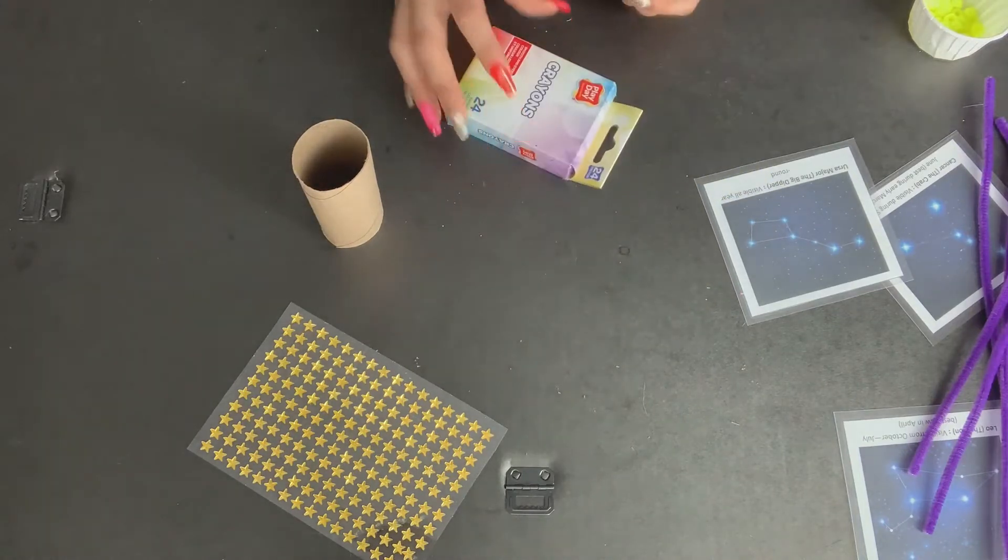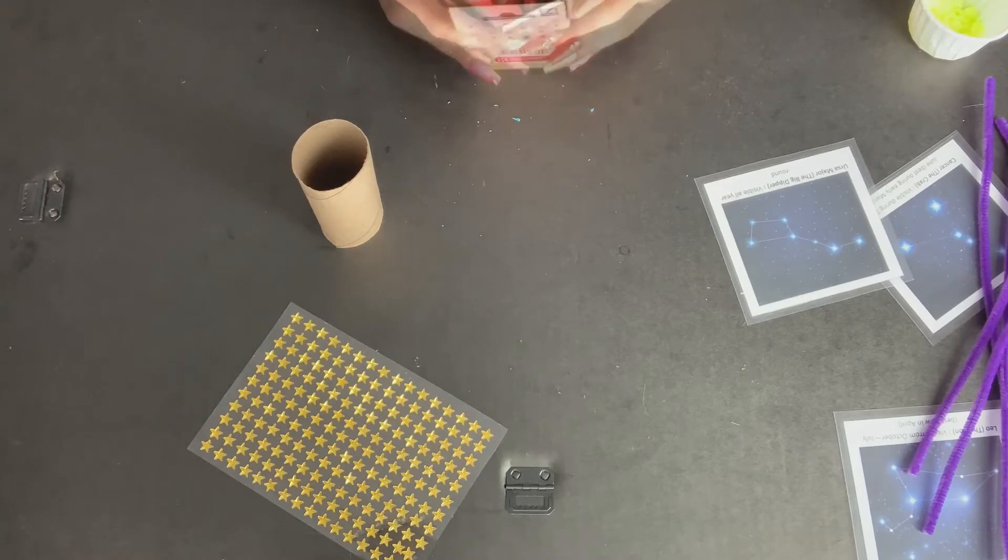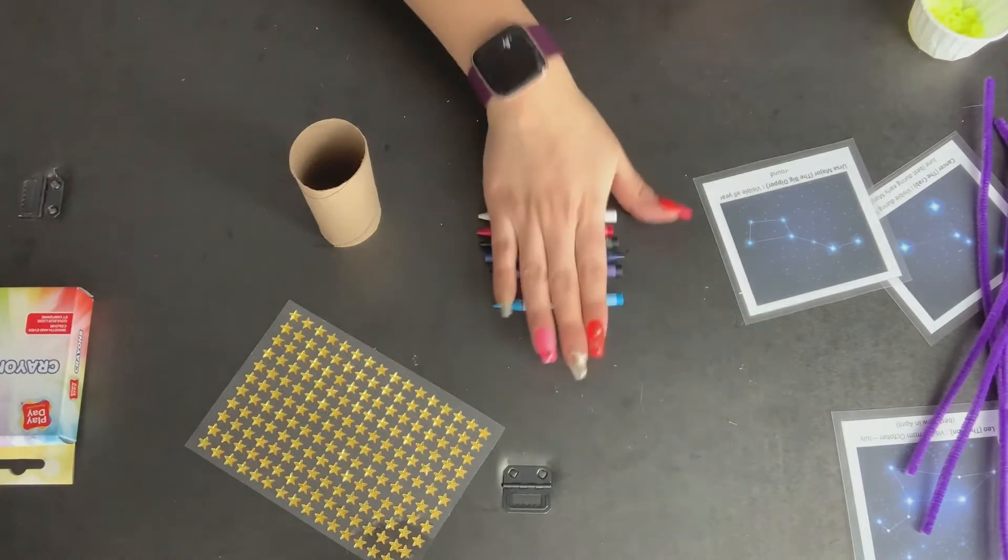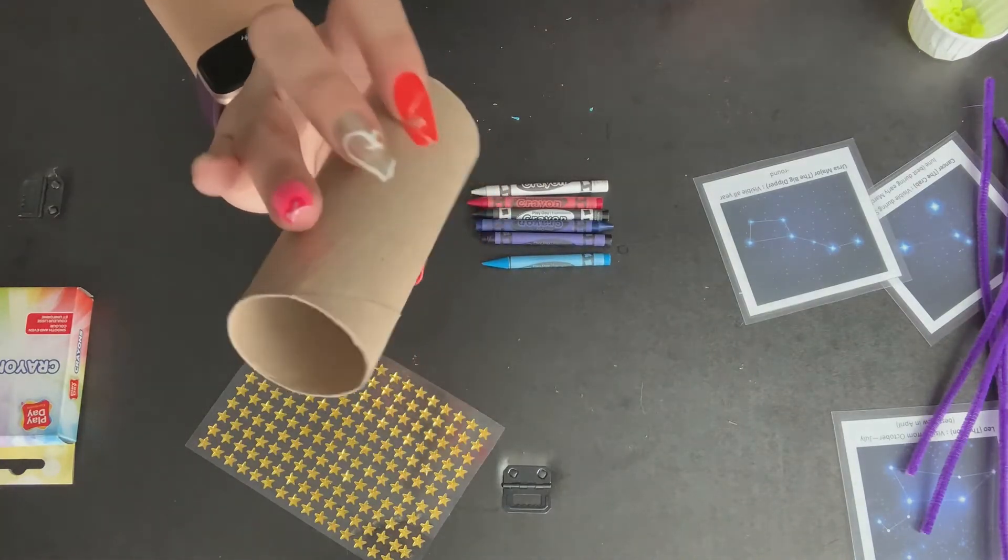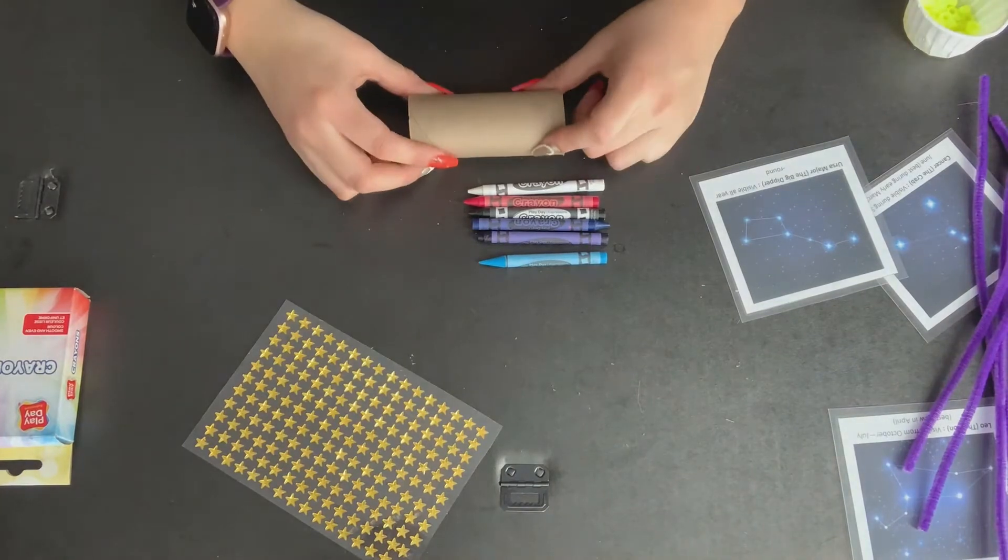To decorate my stargazer, I'm going to be using crayons, and then I'm just going to choose which colors I would like to use for my stargazer. So these are the colors that I've chosen, and I have a blank canvas to start coloring and decorating.